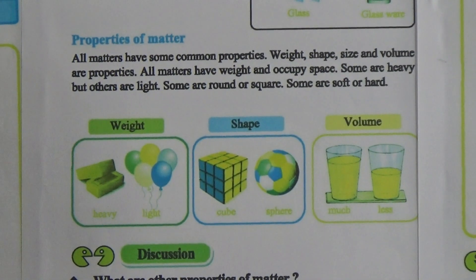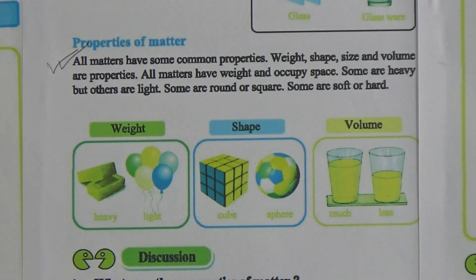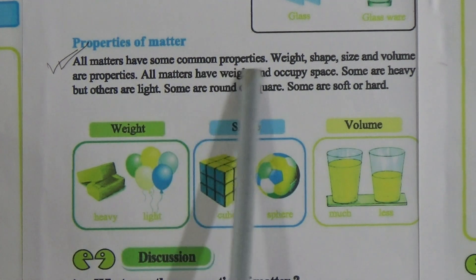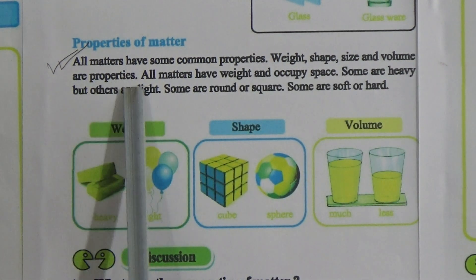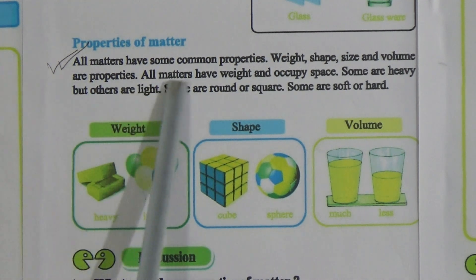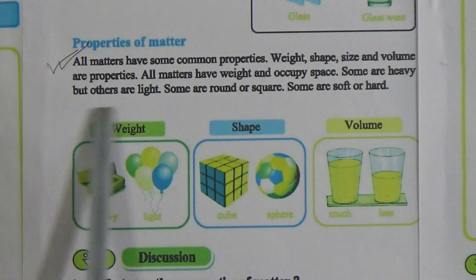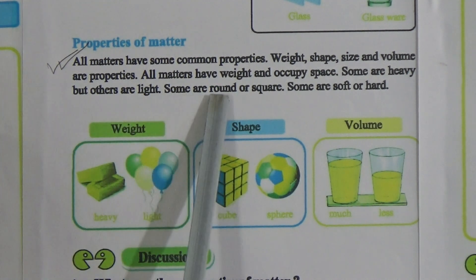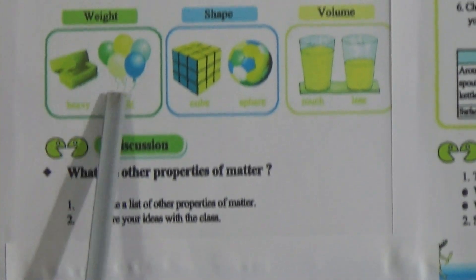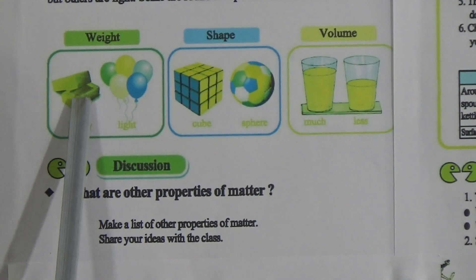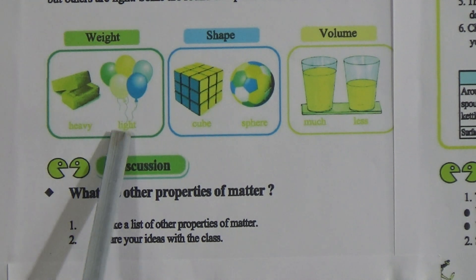Now come to the properties of matter — this is very important for you to learn. All matter has some common properties: weight, shape, size, and volume. All matter has weight and occupies space. Some are heavy and others are light. Some are round or square, some are soft or hard. For example, this one is heavy and this one is light.